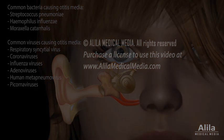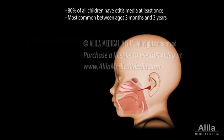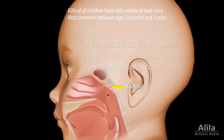Otitis media can occur at any age, but it is most common in small children whose eustachian tube is narrower and more horizontal. The tube opening mechanism in children is also less efficient due to the angle between the tube and the muscle acting on it. Children also have larger adenoids, the pads of lymphoid tissue located near the opening of eustachian tubes.